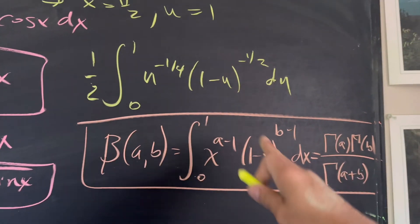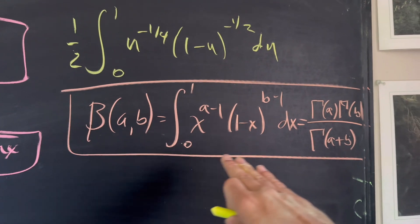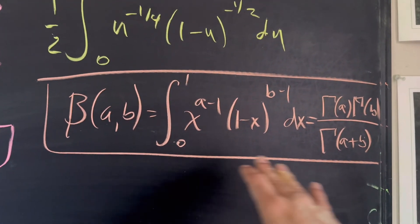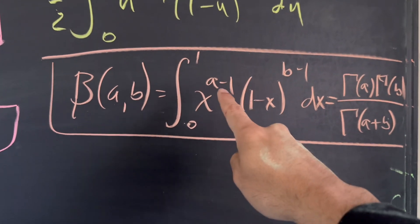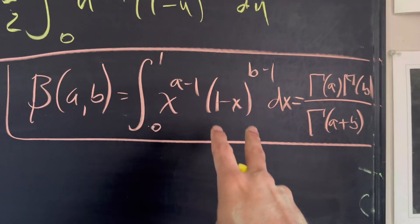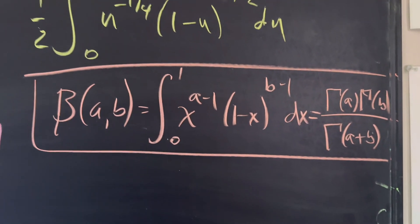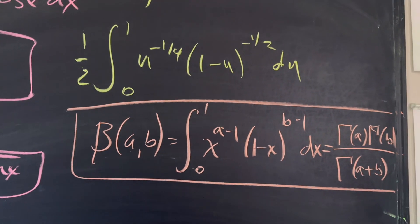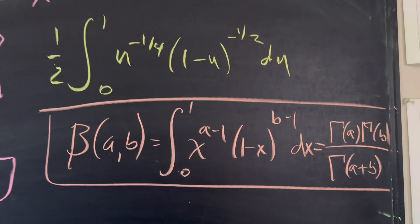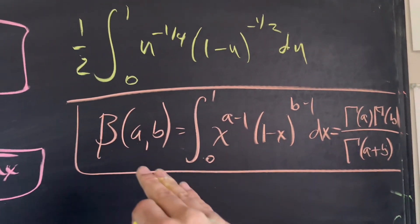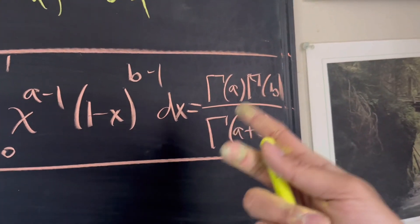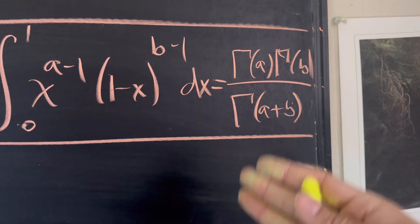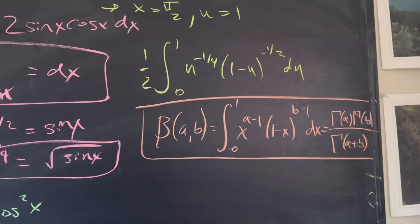You might recognize this integral — this is the Beta function. The Beta function has the form of the integral from zero to one of x to the power of a minus one, times (1−x) to the power of b minus one. This is very similar to what we have; we just need to figure out the values of a and b. This integral equals Γ(a)·Γ(b) / Γ(a+b).